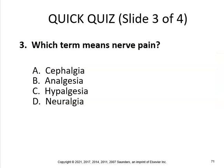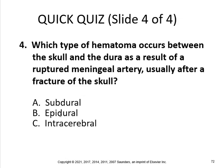Which term means nerve pain? That's neuralgia. Which type of hematoma occurs between the skull and the dura as a result of a ruptured meningeal artery, usually after a fracture of the skull? That would be an epidural — it's above the dura. Below the dura would be a subdural.